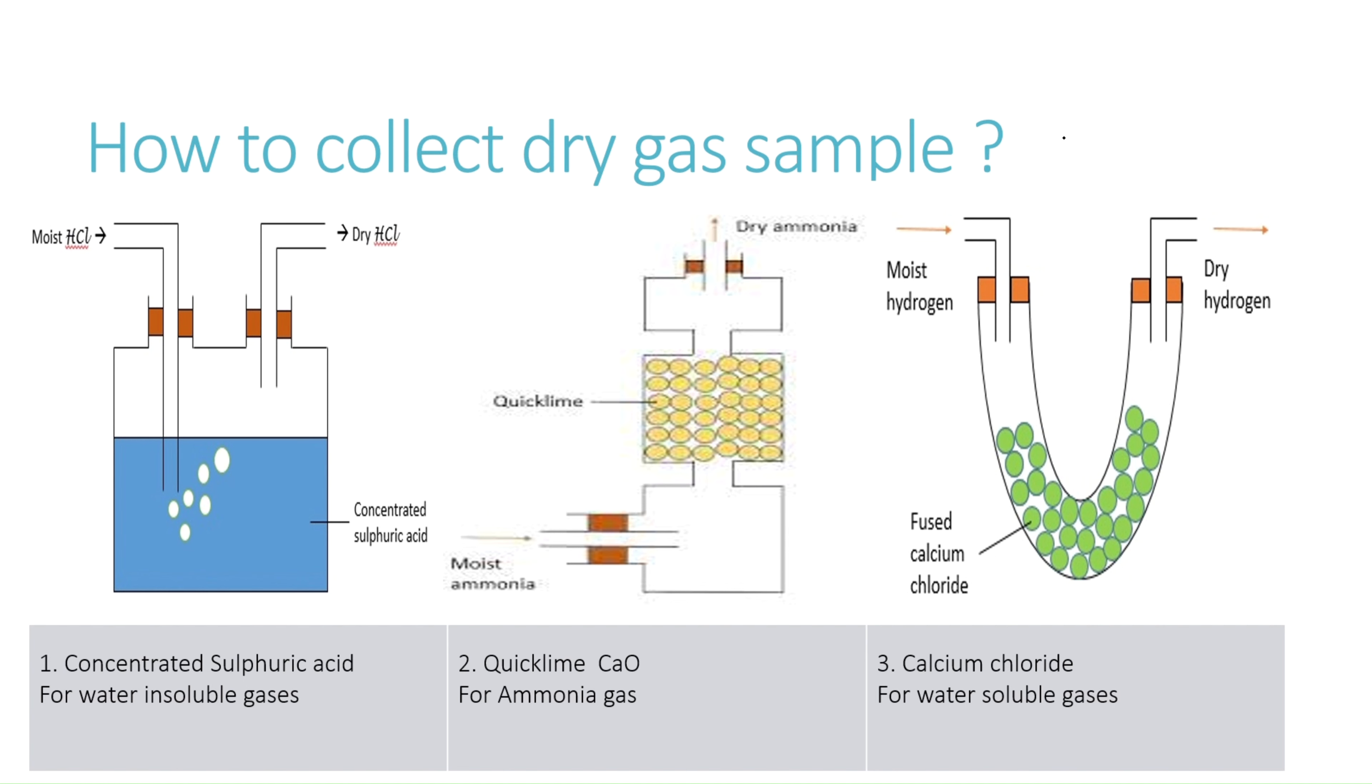Now how to collect dry gas sample? The gases that we get may contain water droplets or the gas may be moist. The gases which are insoluble in water and contain water vapors can be dried by passing the moist gas through concentrated sulfuric acid and then collected by upward delivery method. Here you can see the gas moist gas moving in and the dry gas moving out. But sulfuric acid, concentrated sulfuric acid, cannot be used with ammonia because ammonia and sulfuric acid may react together.